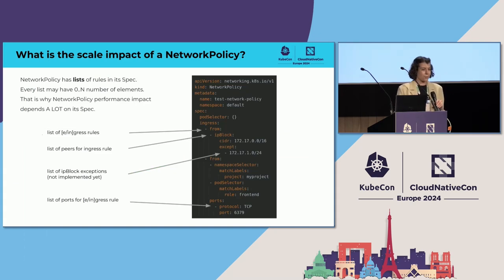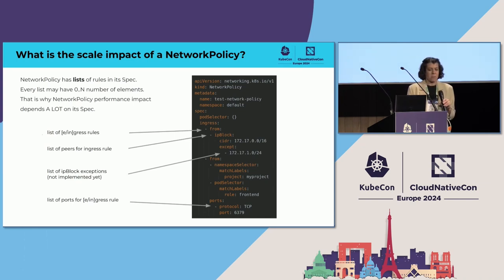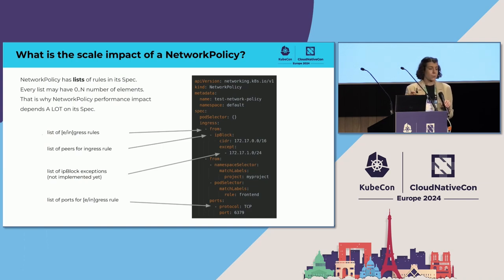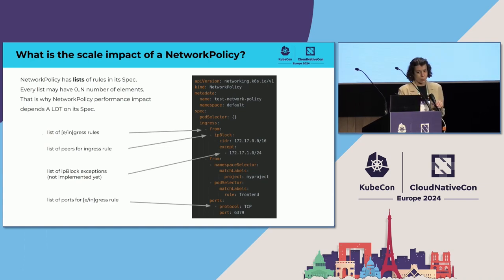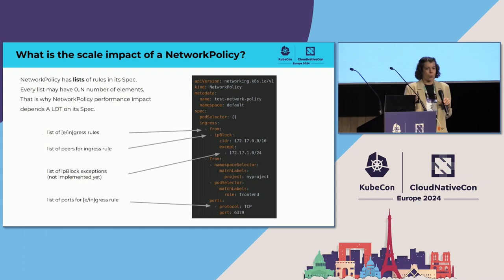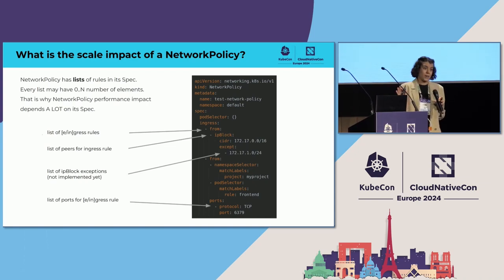There is more than that. The spec of a network policy itself is also pretty tricky. It has lots of lists of different rules, and these lists may have any number of elements. For example, there is a list of ingress or egress rules. Every rule may have a list of peers that specifies IP blocks, exceptions for CIDR rules, lists of different ports, and many more. A simple policy with one rule is very different from a complicated one with hundreds or thousands of rules. Both are just one network policy, but saying 'I can create one network policy' without more details doesn't clarify the scale impact.